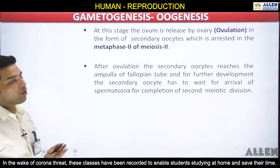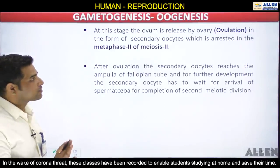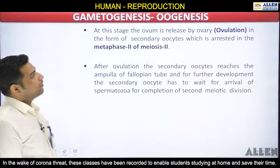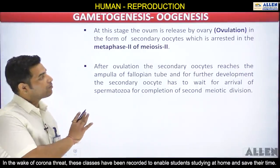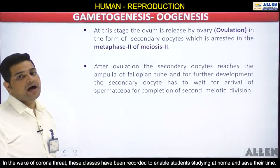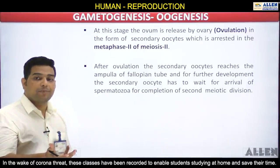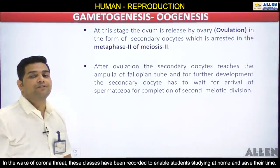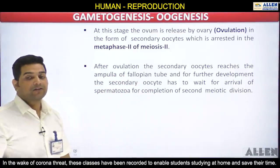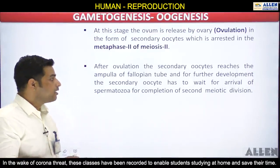In this arrested condition at metaphase II, the ovum is released by the ovary in the form of a secondary oocyte. This releasing of the ovum from the ovary is known as ovulation. After ovulation, the arrested secondary oocyte reaches the ampulla of the fallopian tube. When the ovary releases the gamete, it is collected by the fimbriae — finger-like projections of the fallopian tube — and transferred to the ampulla. The secondary oocyte then waits for the arrival of sperms.